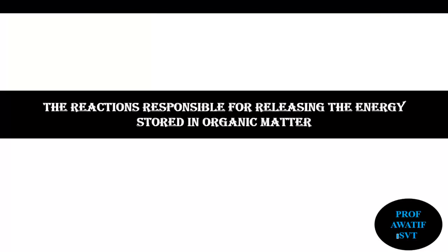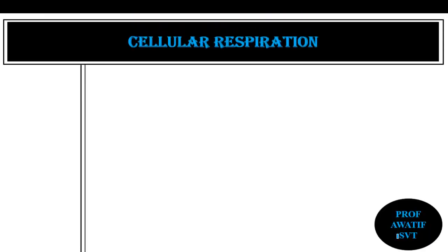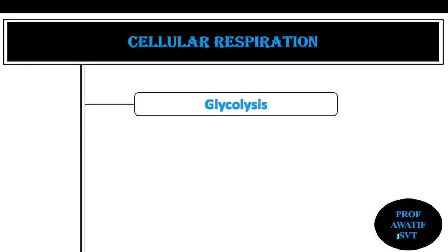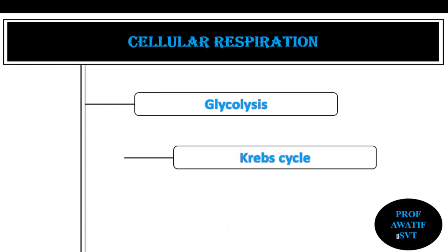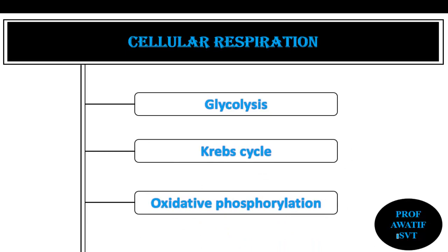In this video we are going to talk about the first process of producing energy inside of our cells, which is cellular respiration. Cellular respiration can be broken down into three phases: the first phase is glycolysis, the second is the Krebs cycle, and the third one is oxidative phosphorylation or the electron transport chain.